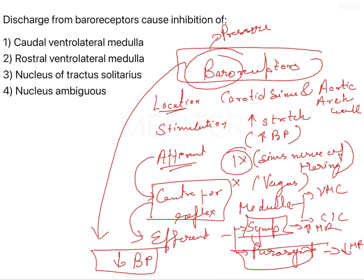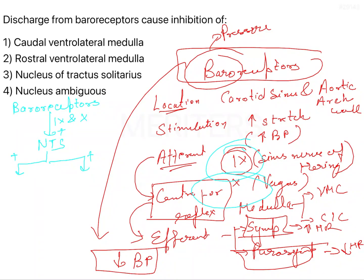Here is a basic pathway chart. Baroreceptors send signals via the afferent pathway through the 9th nerve and 10th nerve, which stimulate the nucleus tractus solitarius (NTS). The NTS then exerts a stimulatory effect on two structures: the CVLM (caudal ventrolateral medulla) and the CVC (cardiovagal center). The cardiovagal center, as the name suggests, involves the vagus nerve, which is a parasympathetic nerve.